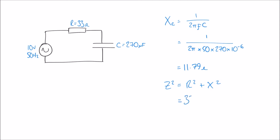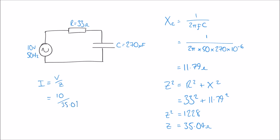Putting the values in: Z² = 33² + 11.79² = 1228. Again, that's Z squared, so we find the square root: Z = √1228 = 35.04 ohms. Now we can calculate the current using I = V/Z. With V = 10V and Z = 35.04 ohms, that gives a current of 0.285 amps, or 285.39 milliamps.